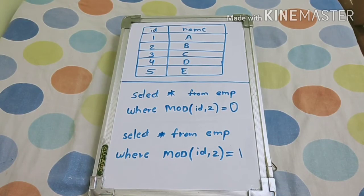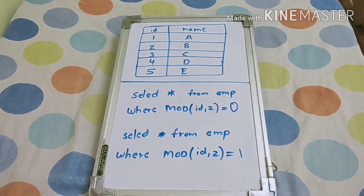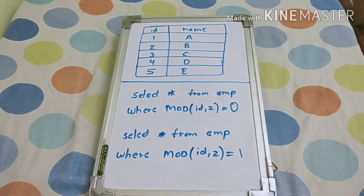So these are the simple queries to find even and odd, or you can also say alternate records in the SQL table. And you can also watch our previous two videos from the series right now.